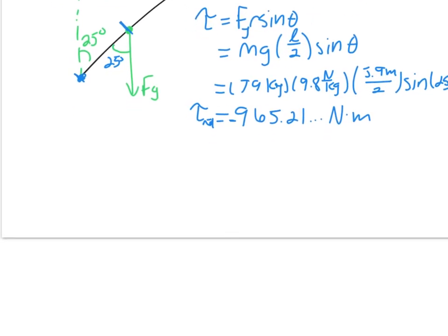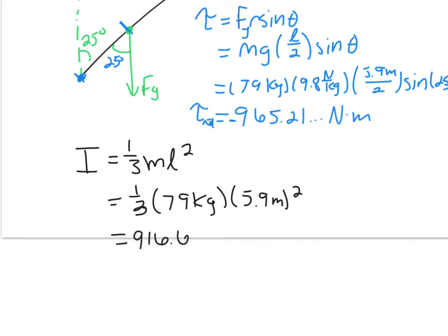Now we need to figure out the moment of inertia. This is a rod rotating about its endpoint. Moment of inertia for that shape is 1/3 mL squared. So this equals 1/3 times 79 kilograms times 5.9 meters squared. And we're going to get 916.63 keeps on going kilogram meters squared. And again, I would always give you the formula. You don't have to memorize this.